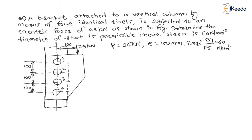The question is to find the diameter of the rivet. Now, because of this force P, the rivets are subjected to primary shear load as well as P into E acting as a torque — therefore they are subjected to torsion, meaning secondary shear loads. For these 4 rivets, we can say the centroid will be exactly at the centre between rivets 2 and 3, at location G.